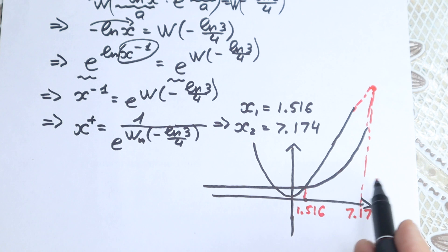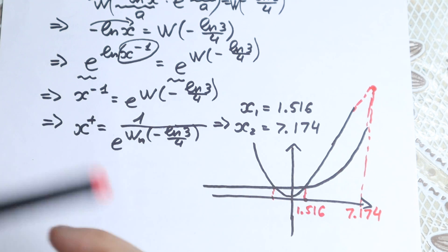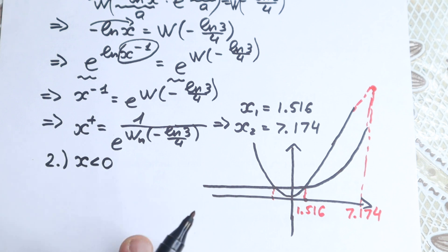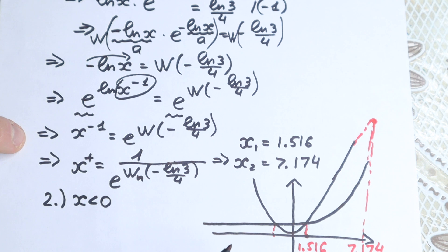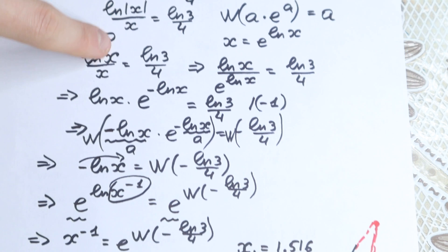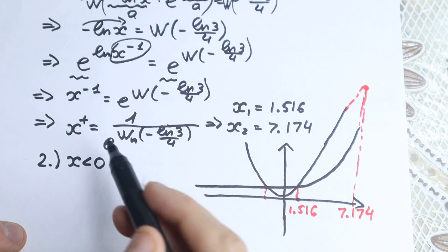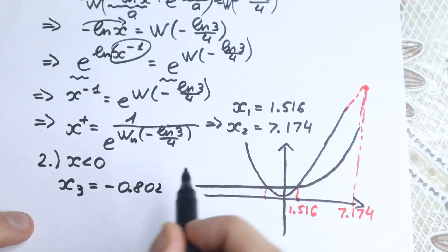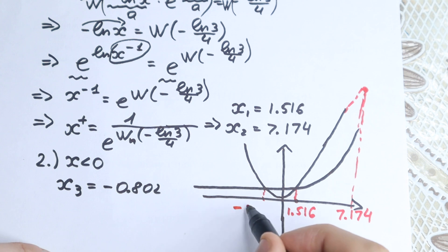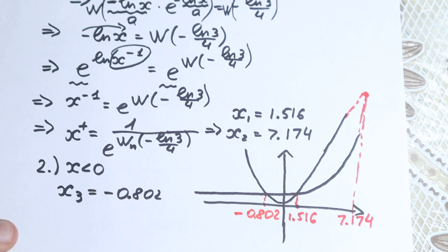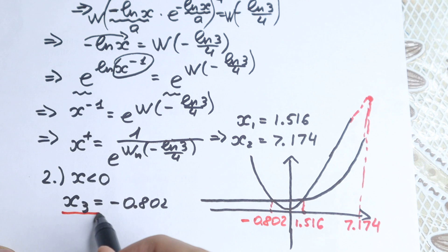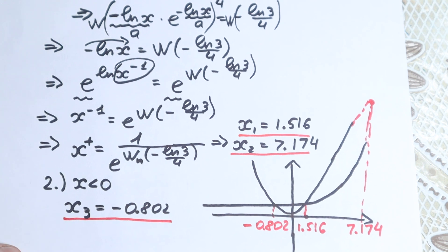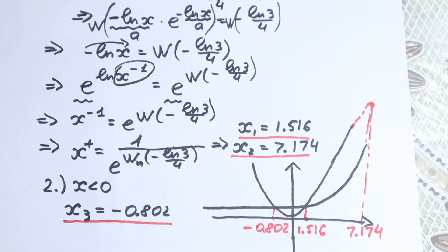But there is also a third intersection point visible on the graph, which comes from the negative case. That is your homework: put minus x into the equation and follow the same steps. You will find x₃ equals approximately minus 0.802. You can verify all three roots on the graph. This is my solution to this problem — I wish you all the best in your mathematics adventures. Thank you for your time and have a great day.